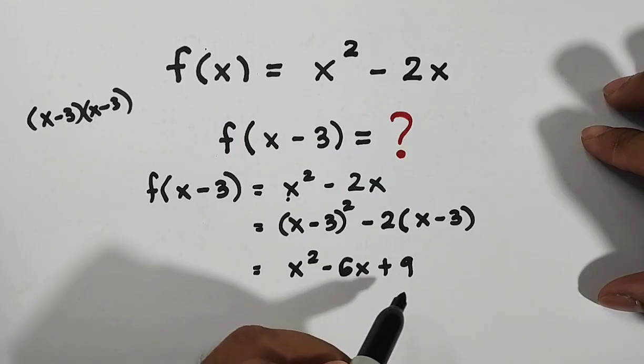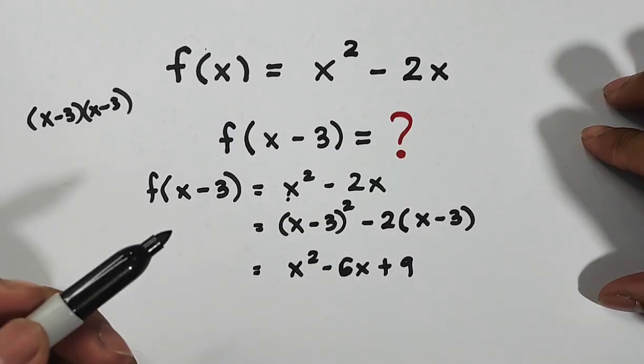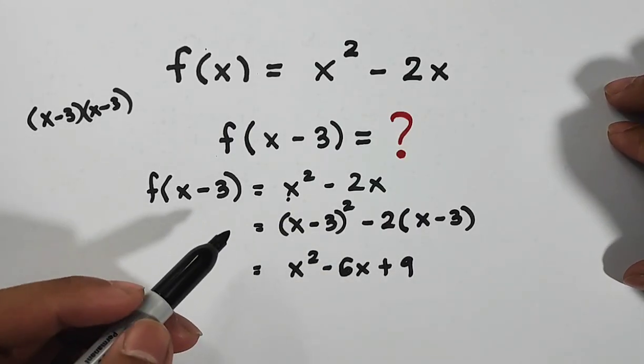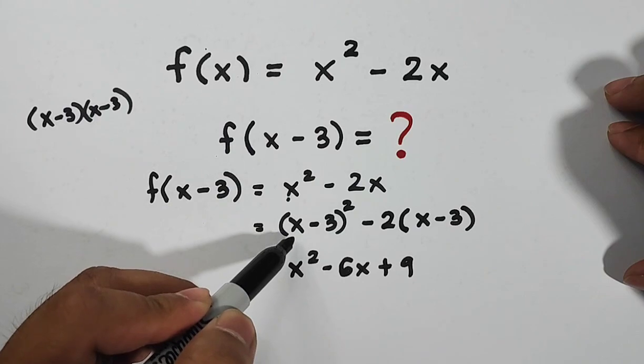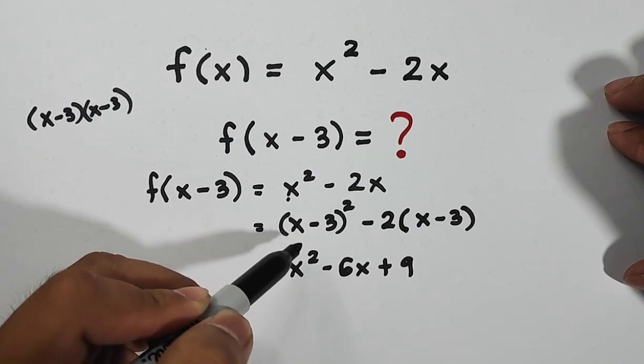Or we have a pattern for square of binomial. The pattern is like this, this is the shortcut.